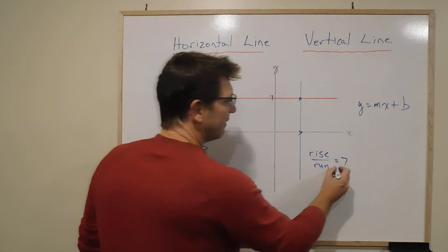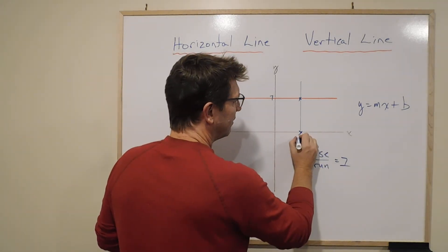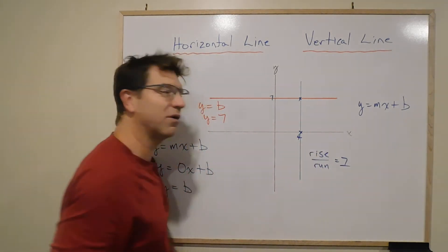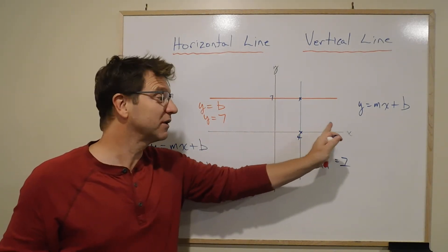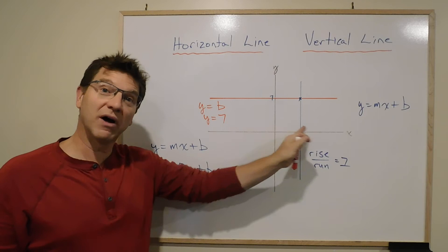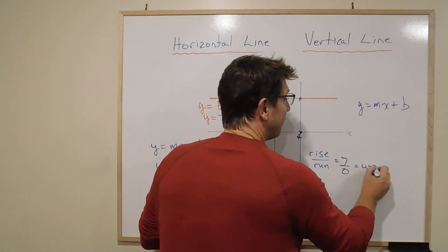But the run—well, if this was 4, let's say for argument's sake that is 4, and it goes straight up and down, it doesn't go from x is 4 to something else. So the run side to side is 0, which is undefined.